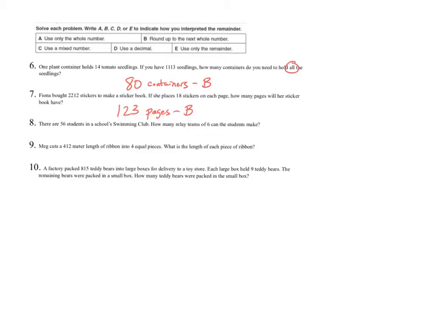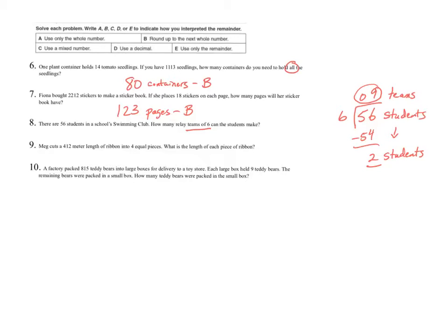Question 8 says there are 56 students in a school swimming club. How many relay teams of six can the students make? I have 56 students divided into teams of six. 6 does not go into 5, but it goes into 56 nine times, leaving 2 students. The problem asks how many teams of six can I make — I have nine teams of six and one team of two. Those last two students are not a full team of six, so I can only make 9 teams of six. I ignored the remainder and used only the whole number — Strategy A.